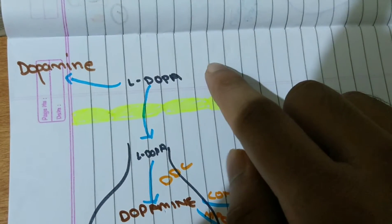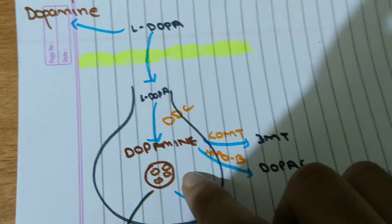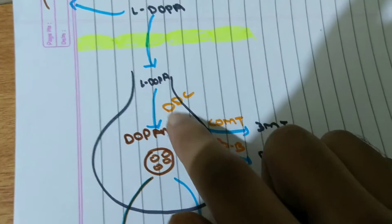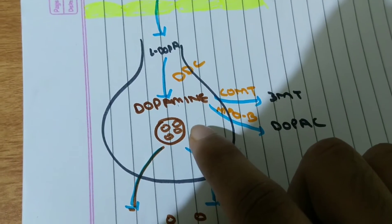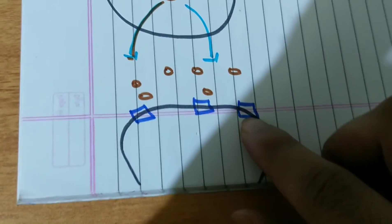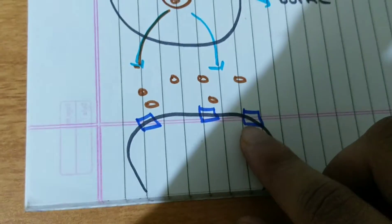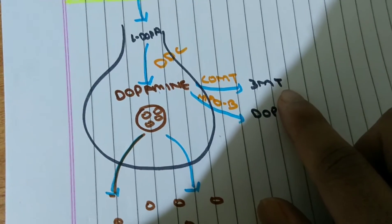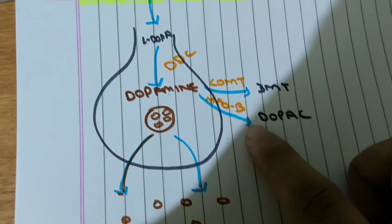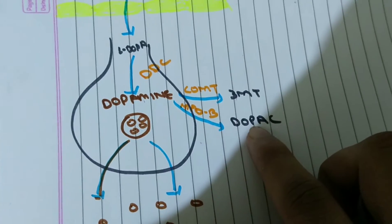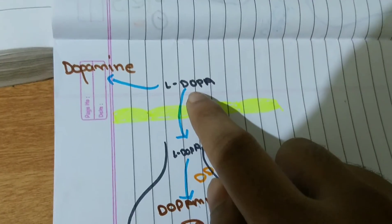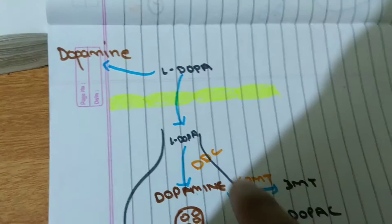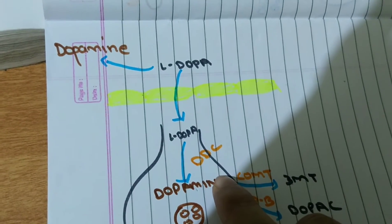L-DOPA in the circulation crosses the blood-brain barrier into the presynaptic terminal where it is converted into dopamine using DOPA decarboxylase. These dopamine are stored in vesicles and released into the synapse which is taken by dopamine receptors in the postsynaptic terminal. This dopamine is also converted to 3-MT using catechol-O-methyltransferase or COMT, or converted to DOPAC using monoamine oxidase B or MAO-B.